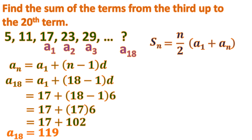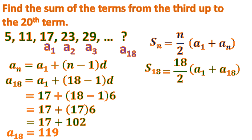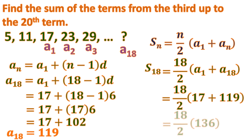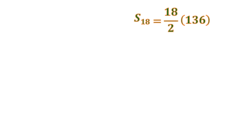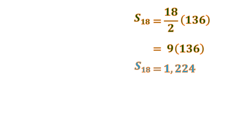Now we can solve for the sum using the formula. There are 18 terms, so S18 equals 18 over 2 times the quantity a sub 1 plus a sub 18, which is 17 plus 119. Combining 17 and 119 gives 136, and 18 divided by 2 is 9. So 9 times 136 is 1,224. The sum of the sequence from the 3rd up to the 20th term is 1,224.